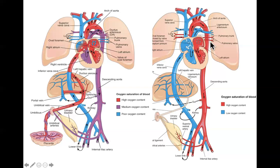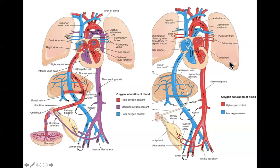Once the foramen ovale and ductus arteriosus collapse and seal, no more blood can come through either of those two openings. We're left with lungs now full of air that provide a rich supply of oxygen - highly oxygenated blood flowing back through the pulmonary veins into the left atrium, from there to the left ventricle, and out to the rest of the body, providing substrates and oxygen to efficiently perform metabolic functions. Poorly oxygenated blood comes back to the heart through the vena cava and goes out through the pulmonary arteries to the lungs, where it becomes highly oxygenated again.